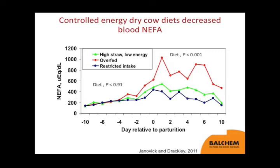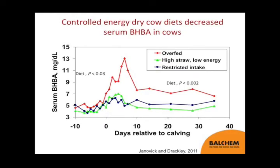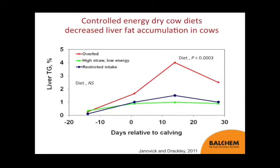You can see that the NEFA concentration is higher in those animals that were overfed, starting a few days pre-partum and continuing post-partum. For serum beta-hydroxybutyrate, with that higher NEFA concentration, there appeared to be greater oxidation or partial oxidation to ketone bodies and greater beta-hydroxybutyrate in the blood. For liver triglyceride, with fewer fatty acids in blood for the liver to take up on the restricted energy diet, liver triglyceride is reduced relative to those animals that were overfed.